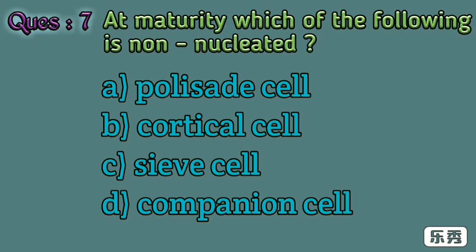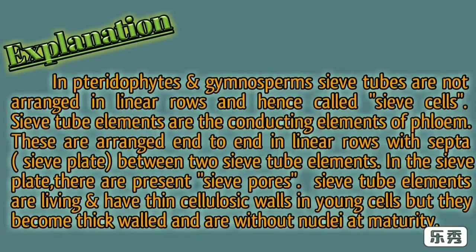Seventh one. At maturity, which of the following is non-nucleated? A) palisade cell, B) cortical cell, C) sieve cell, D) companion cell. Here C, sieve cell, is the right answer. In pteridophytes and gymnosperms, sieve tubes are not arranged in linear rows and hence are called sieve cells. Sieve tube elements are the conducting elements of phloem, arranged end-to-end in linear rows with septa called sieve plates, which contain sieve pores. Sieve tube elements are living with thin cellulosic walls in young cells, but become thick-walled and are without nuclei at maturity.